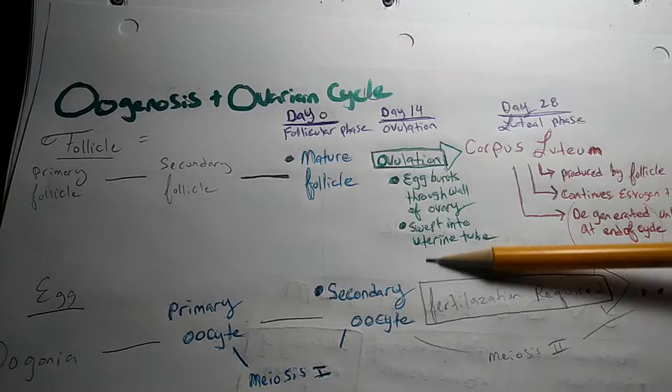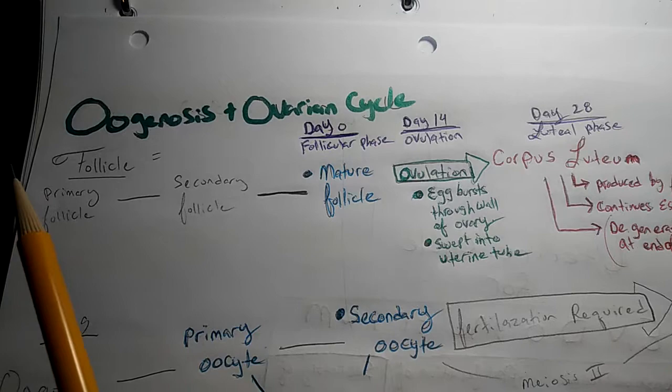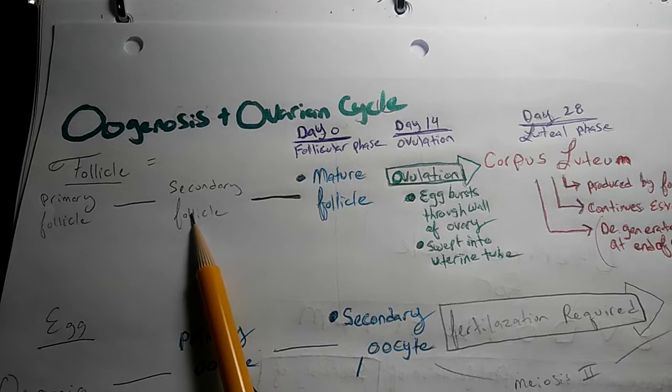So just to get familiar with the oogenesis, we have the follicle versus the egg. The follicle will have the primary follicle here, then secondary follicle. It turns into a mature follicle. Through ovulation, we'll have the corpus luteum.